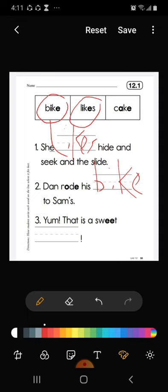Number three, the last but not the least. Yum, that is a sweet cake. Let's circle it. Yum, that is a sweet cake.